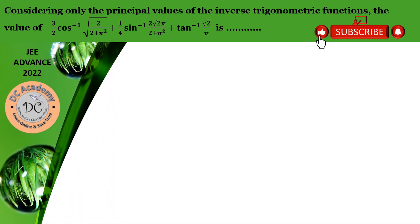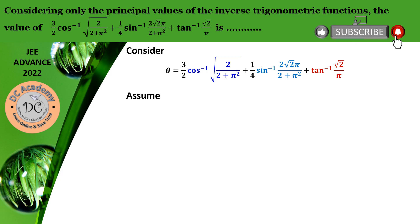First, we consider the given expression as given. We consider that theta is equal to whatever is given as follows. Observe that between the cos inverse term, sin inverse, and tan inverse term, the tan inverse term looks very simple. So we consider that alpha equals tan inverse root 2 by pi.